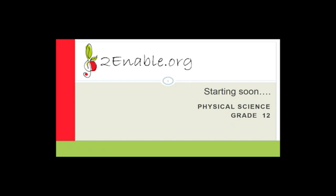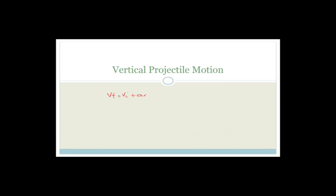As you may remember from yesterday's lesson, we were doing vertical projectile motion. Before we do anything else, I'd like to remind you of the equations of motion. Your equations of motion, which you get given on your formula sheet, are: Vf = Vi + A·ΔT; Vf² = Vi² + 2A·ΔX; ΔX = Vi·ΔT + ½A·ΔT²; and ΔX = (Vf + Vi)/2 · ΔT. We're doing these with respect to vertical projectile motion.